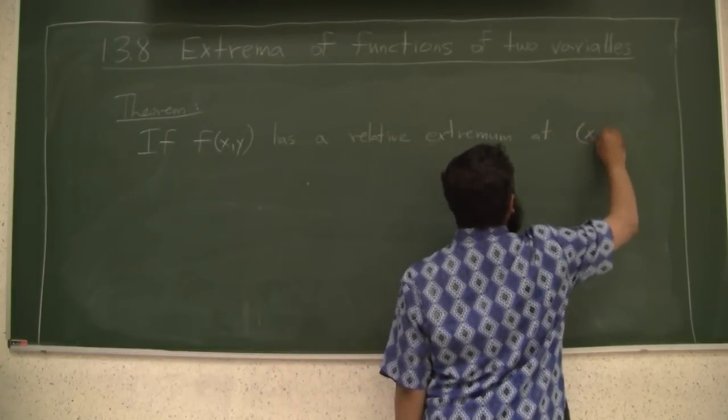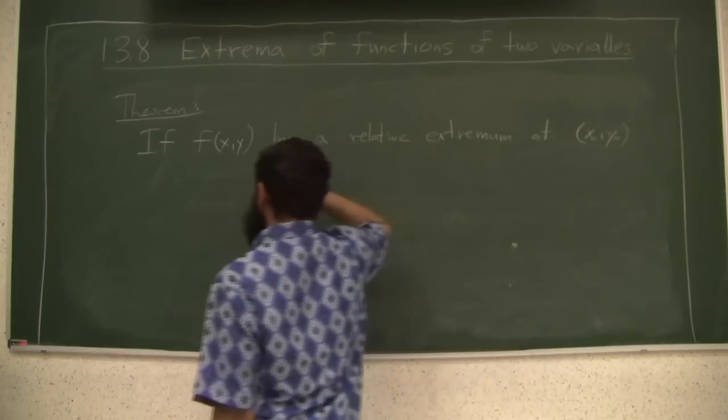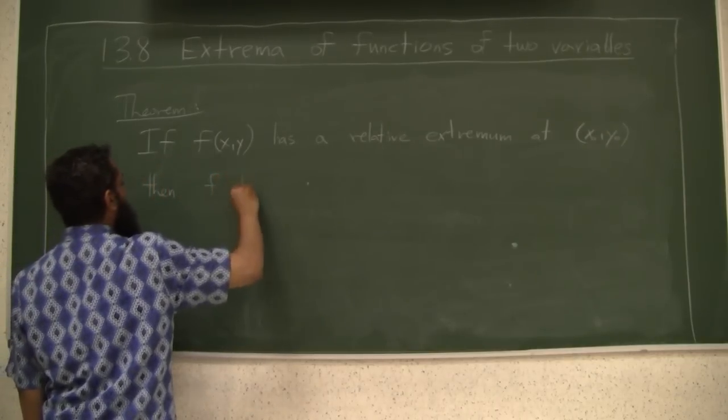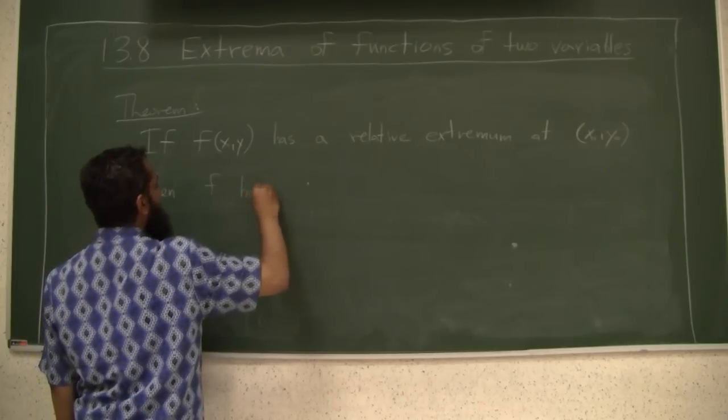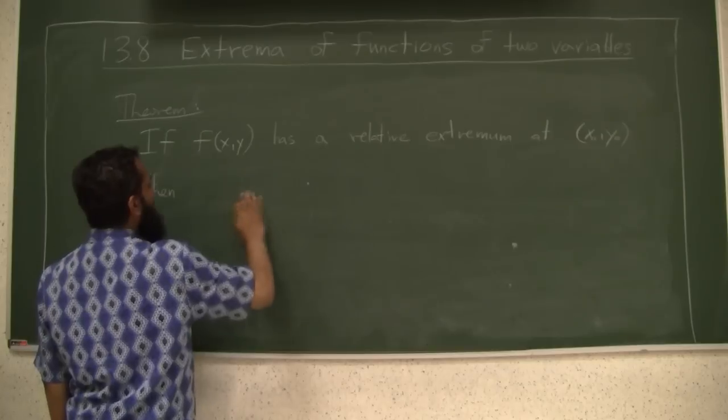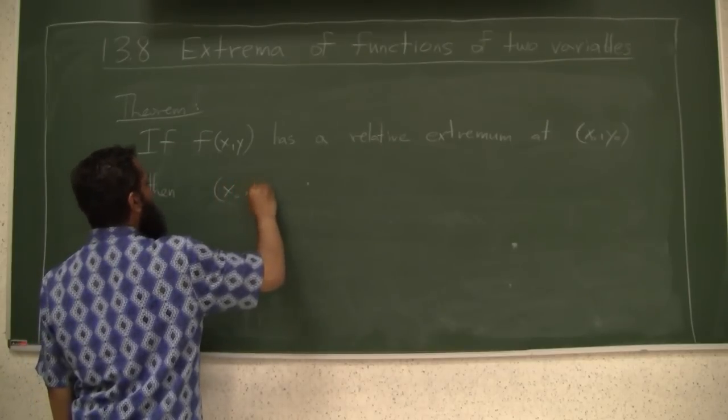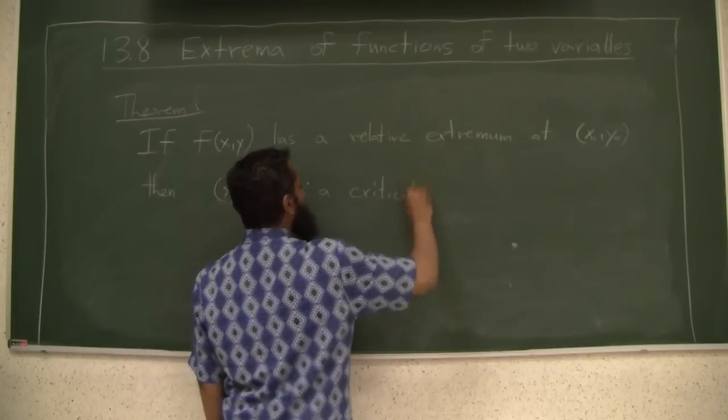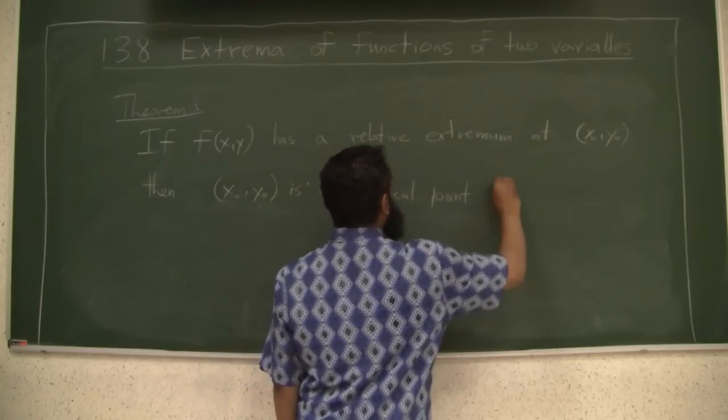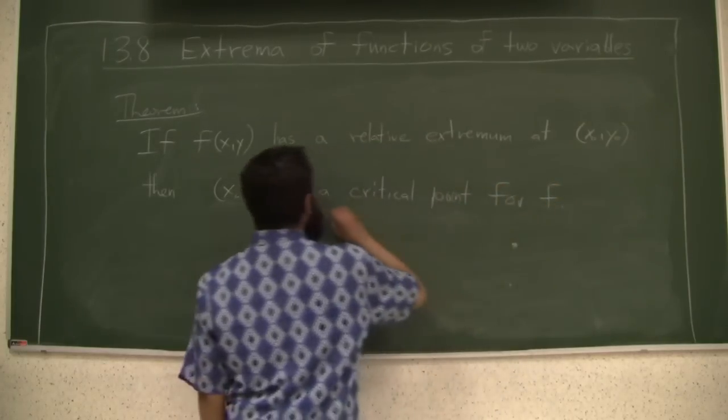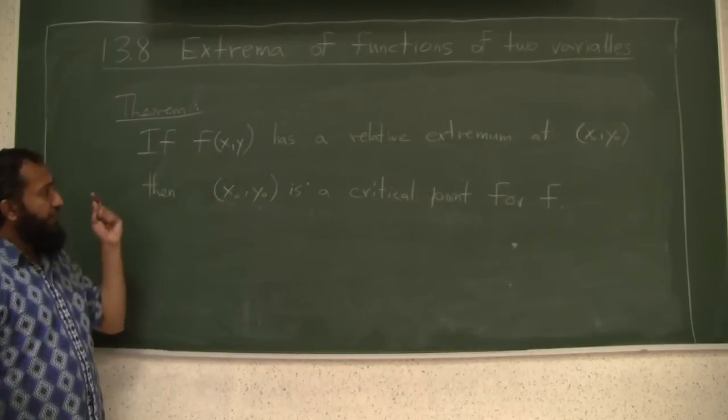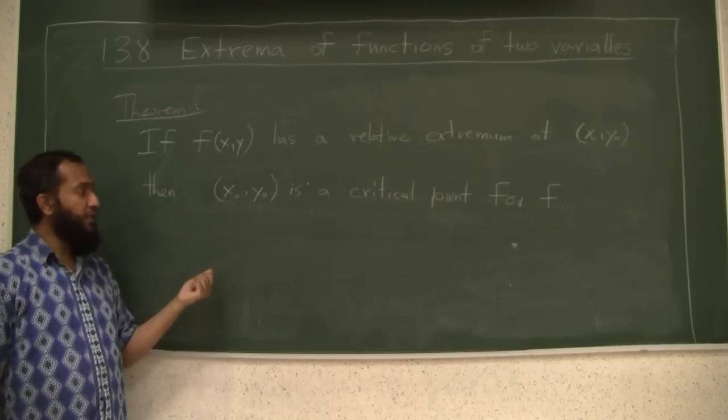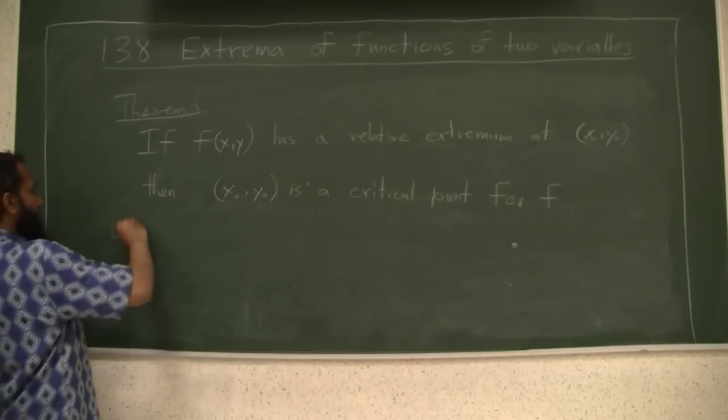If x0, y0, then, if F has a relative extremum at x0, y0, then x0, y0 is a critical point for F. It's a theorem saying that if you will have a relative extremum then at a given point, at that point you basically have a critical point. Warning, right, this is one way of communication.